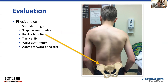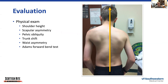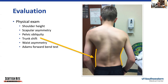We also look for pelvic obliquity — it's not uncommon for patients to feel like their hips are off. We can examine this by putting a finger on each iliac crest and seeing if those fingers are at the same level. We also look for trunk shift: if you draw an imaginary line from the patient's head to their waist, we like to see that the head is nicely centered over their waist, but sometimes the trunk goes off to one side. We also look for waist asymmetry — if the patient has a lumbar curve, on the convex side we'll see more of a bulge, and on the concave side the waist crease goes in, creating an asymmetry.